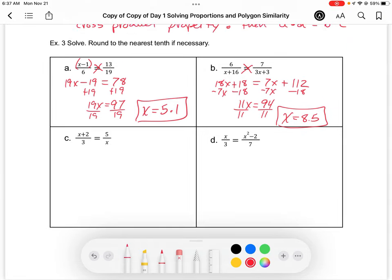We're going to do part d. When we do some of these cross products, you get some quadratics. If I cross multiply, x times 7 is 7x. On the other side, I have 3x squared, then 3 times minus 2, which is minus 6. This is a quadratic.